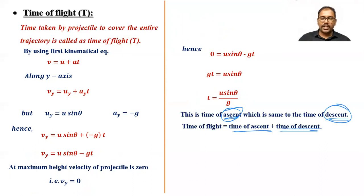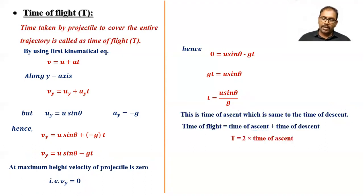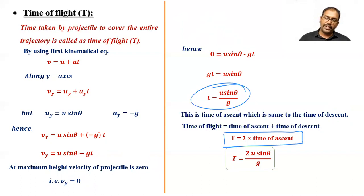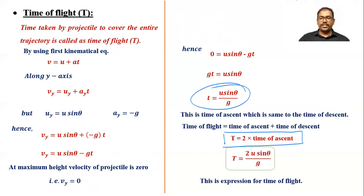The time of flight equals time of ascent plus time of descent. Since both are equal, the total time of flight T = 2 × (time of ascent). Therefore, the expression for time of flight is T = 2u sinθ / g.